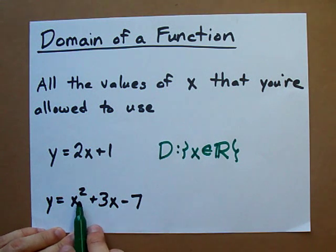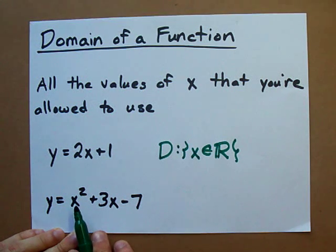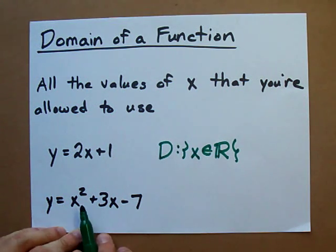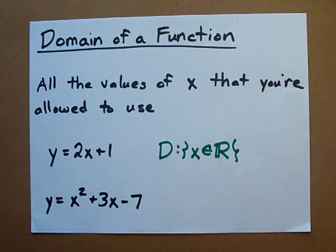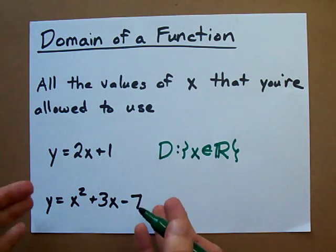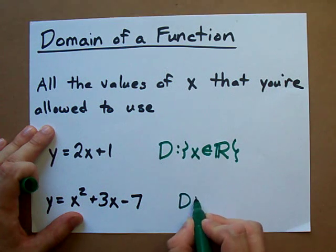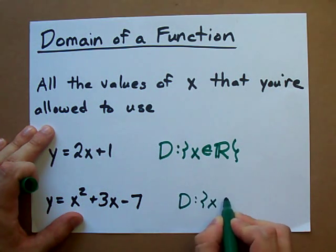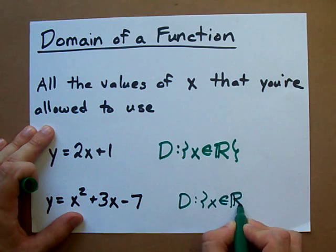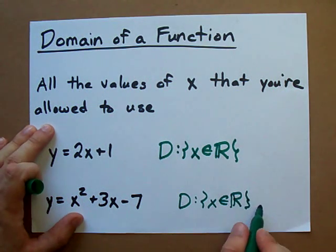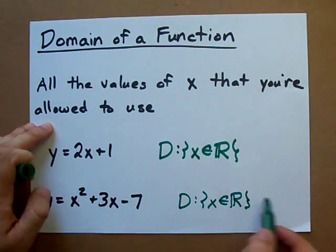And again, when you have a parabola, X can be anything you want here. You can plug in negative five, you can plug in a million, you can plug in negative five point six, doesn't matter. You can plug in anything you want for X so the domain is all real numbers. I'm trying to do some curly bracket thing here; as long as you make an effort it's going to be okay.